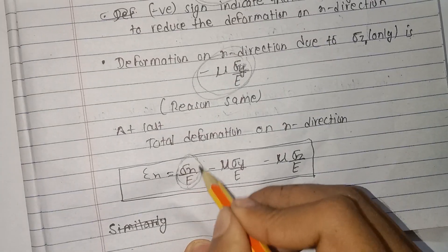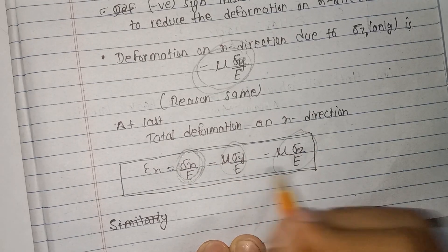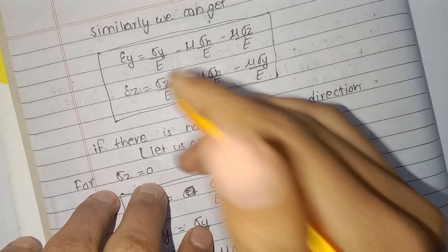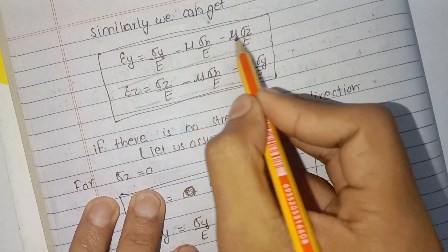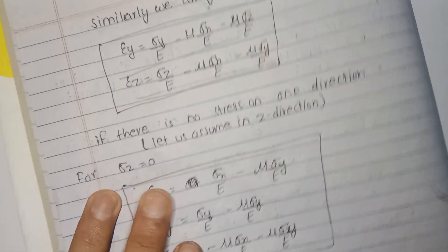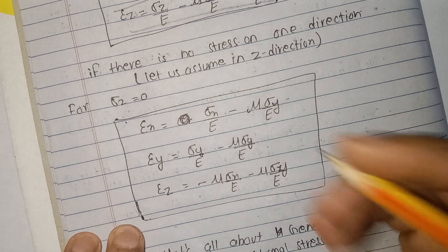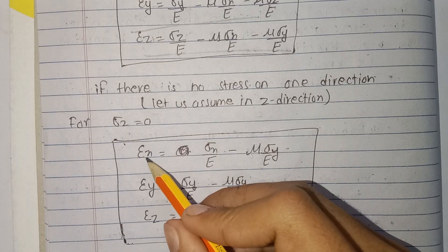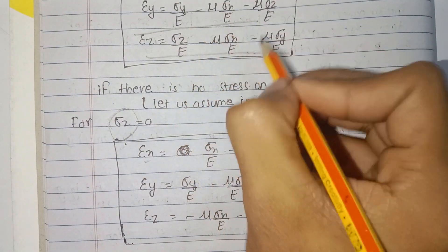Therefore, the total deformation in the x-direction is: epsilon x equals sigma x by E, minus nu times sigma y by E, minus nu times sigma z by E. As a simple check — if there is no stress in the y and z directions (sigma y = 0, sigma z = 0), then epsilon x equals simply sigma x by E, which matches the simple Hooke's Law case.